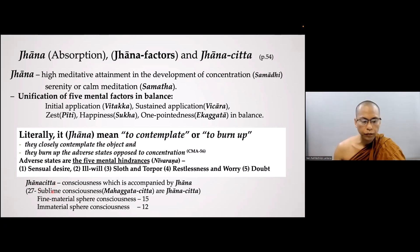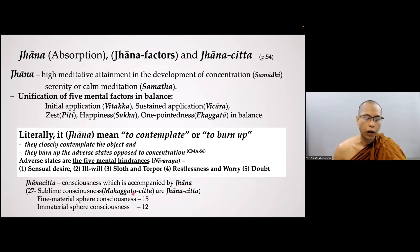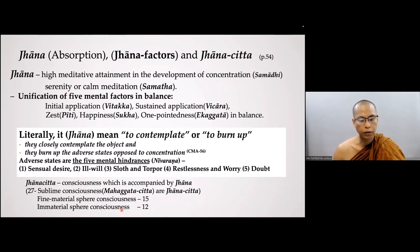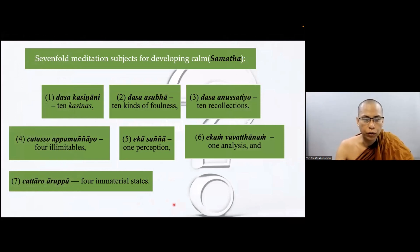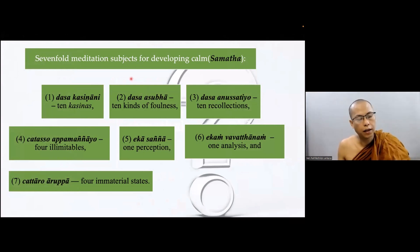For the Jhanacittas — consciousness accompanied by jhana — jhana is the unification of the five mental factors in balance, sometimes four or three. In chapter one we already identified the sublime consciousness, called Jhanacittas, altogether 27: fine material sphere consciousness 15, and immaterial sphere consciousness 12. These are called jhana through the development of calm meditation. Here in this chapter, Kamathana Sangaha, chapter nine, the 40 meditation subjects are explained in seven groups.